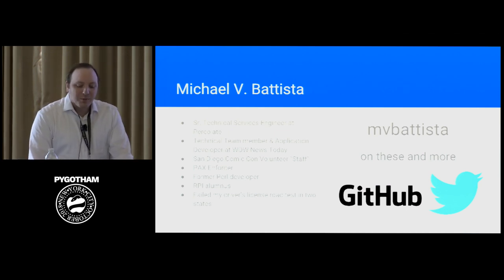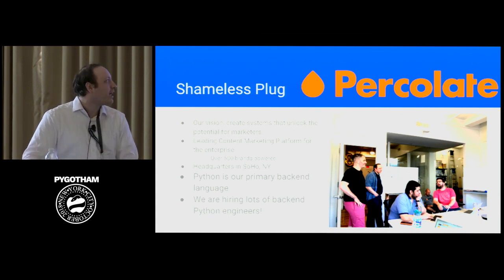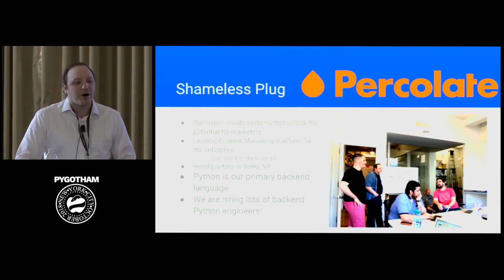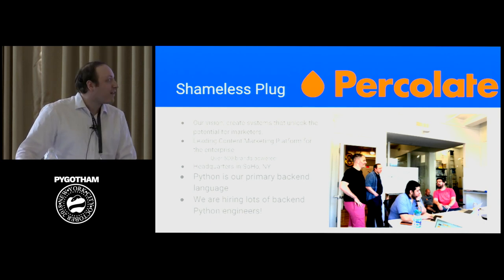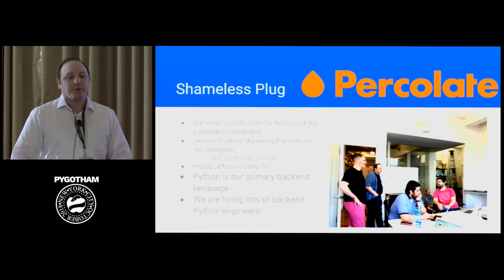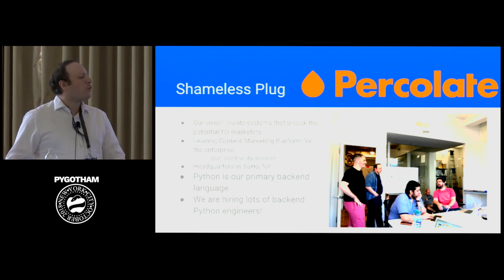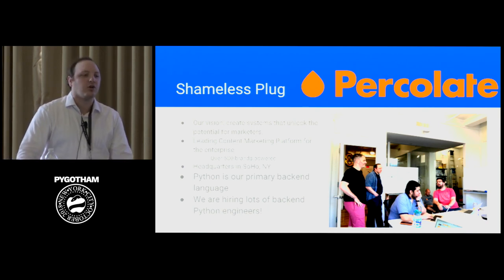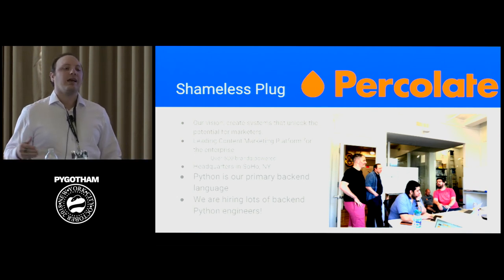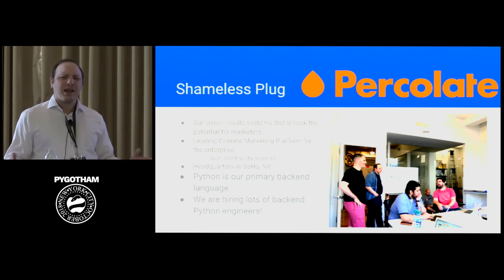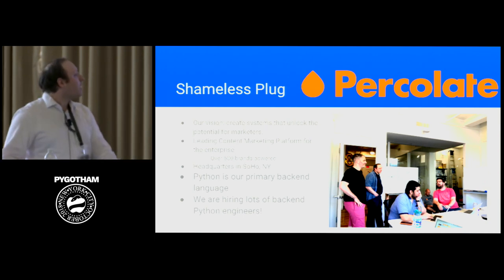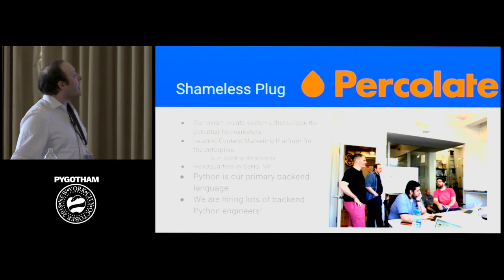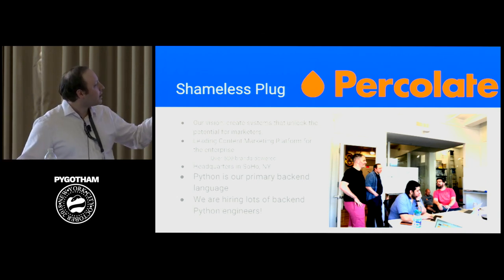Before we start, a shameless plug for where I work — a wonderful place called Percolate. We create systems that unlock the potential for marketers. We are the leading content marketing platform for enterprise businesses, with about 600 brands using Percolate for their marketing coordination. We're headquartered in Soho. Python is our main back-end language. We have some wonderful guys in engineering and we're hiring lots of Python engineers.